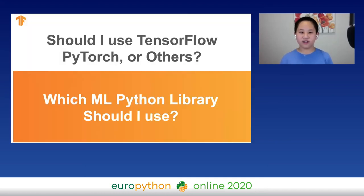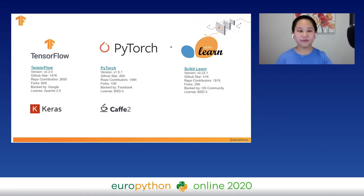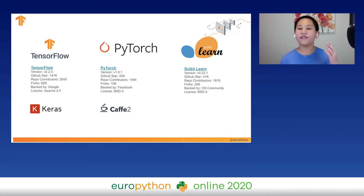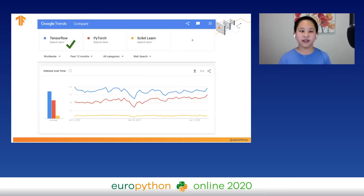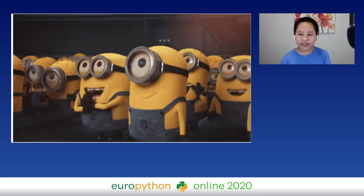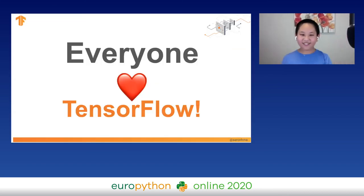There are many machine learning Python libraries — which should you use? The top three most popular are TensorFlow, PyTorch, and scikit-learn. TensorFlow by far has the most GitHub stars, is backed by Google, and under the hood is based on Keras. PyTorch has 40k stars, is backed by Facebook, and is built on top of Caffe2. Scikit-learn has 41k GitHub stars and is backed by the open-source community. Looking at statistics from the past 12 months worldwide, TensorFlow is the world's most popular search term in the machine learning category — so the winner is TensorFlow!